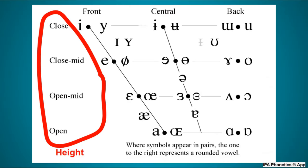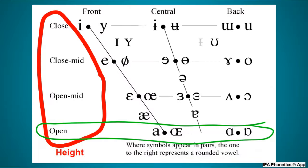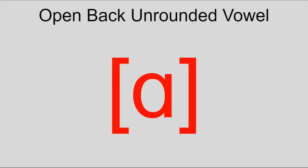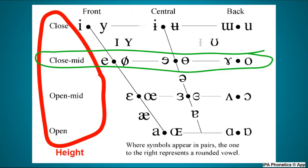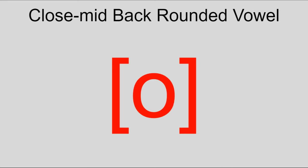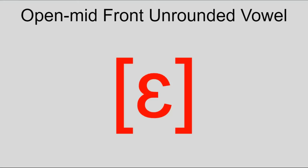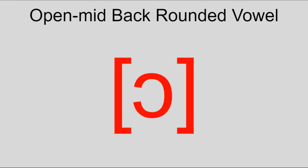The linguistic names of vowels are formed with three words in a specific order followed by the word 'vowel.' The first of these words is the height of the tongue during the vowel, ranked from close like E and U to open like AH. Between that, there's also close-mid like E and O, mid like UH, and open-mid like EH and AH.